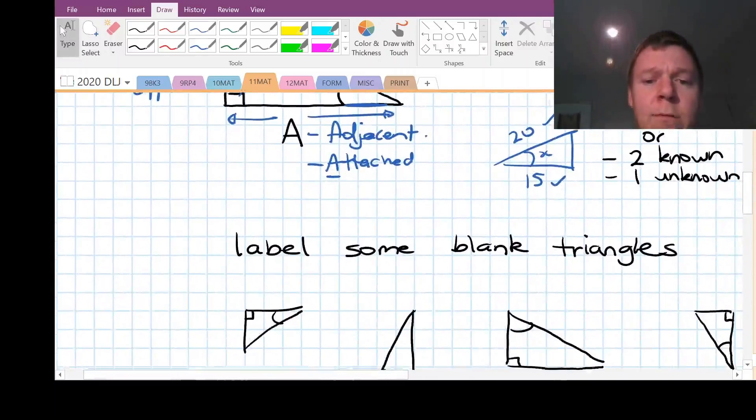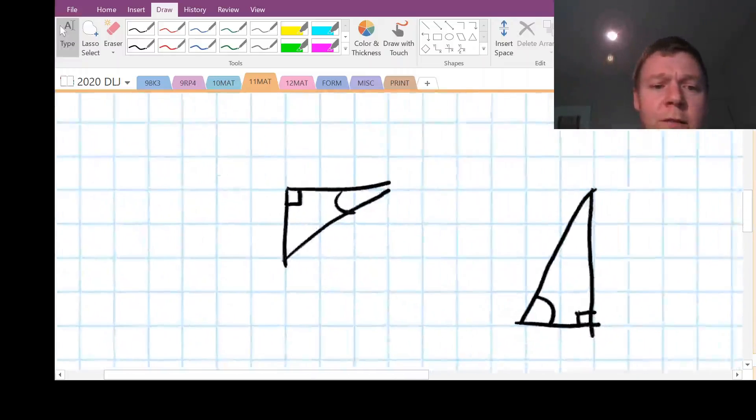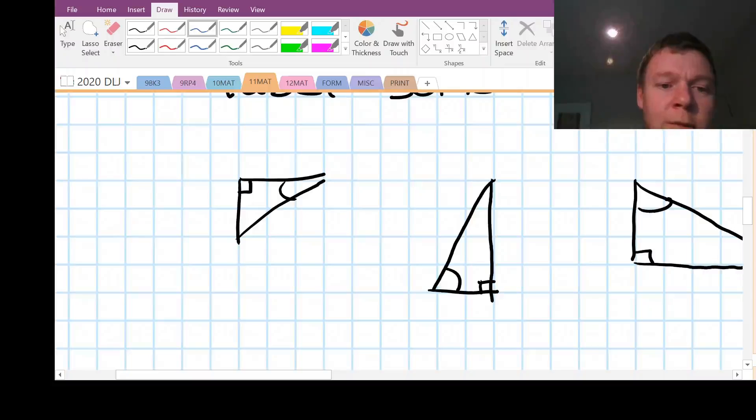All right. Once you get the hang of that, we're just going to label a few triangles. So let's zoom in on this one. So the side opposite the right angle is our hypotenuse. The side attached to the angle is up here. And the side opposite the angle is here. Easy enough.